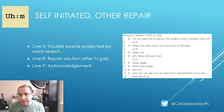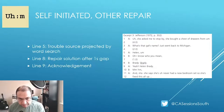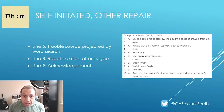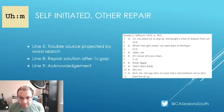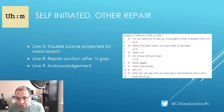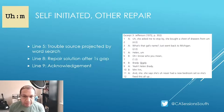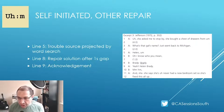This is an example of self-initiated other repair. The trouble is produced on line five when participant A is unable to locate the surname of Helen. It's on line eight that the other participant offers a repair solution after a one-second gap. And it's on line nine that the repair solution is acknowledged and this particular sequence is closed.